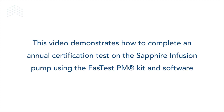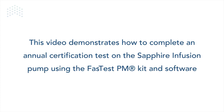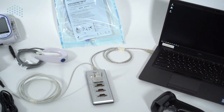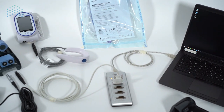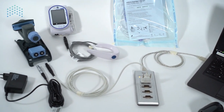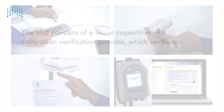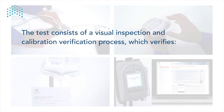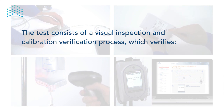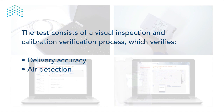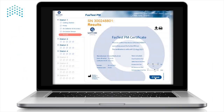This video covers an annual certification test on the Sapphire infusion pump using the Fast Test PM kit and software. The Fast Test PM is an intuitive and easy-to-use tool that allows you to independently and automatically complete the annual certification process on a Sapphire infusion pump within a few minutes. The test consists of a visual inspection and calibration verification process, which verifies delivery accuracy, air detection, and occlusion detection. At the end of the process you will receive a manufacturer certificate that can be saved electronically or printed if needed.